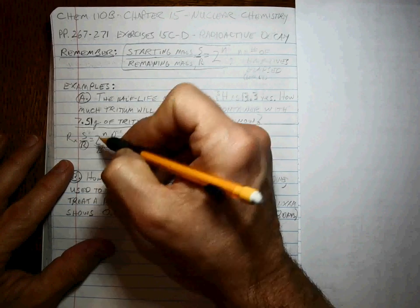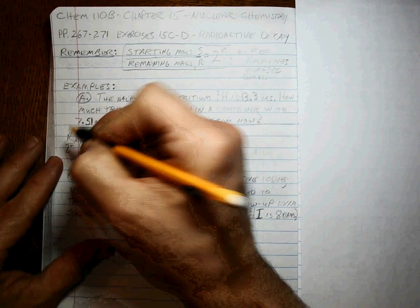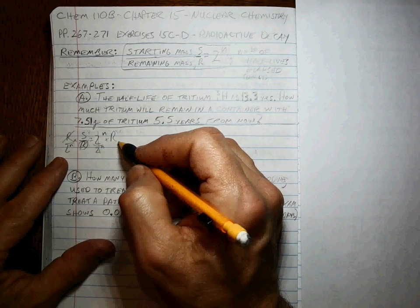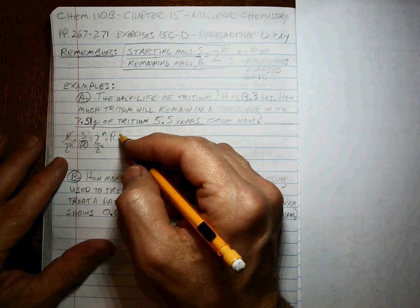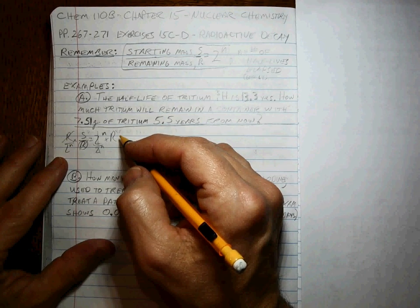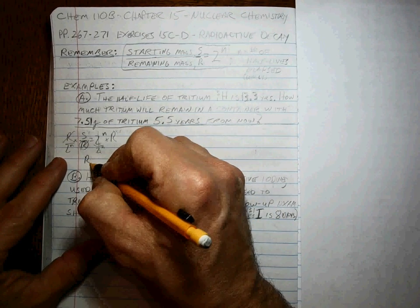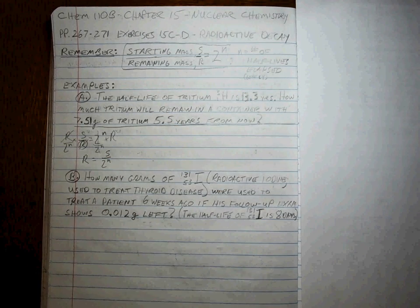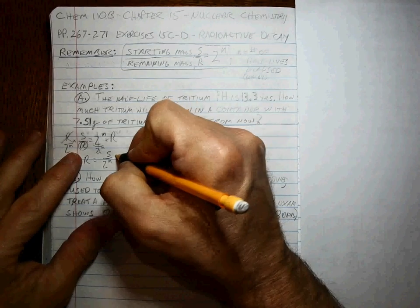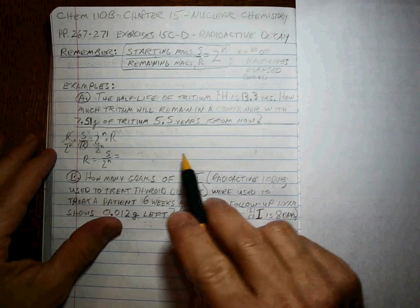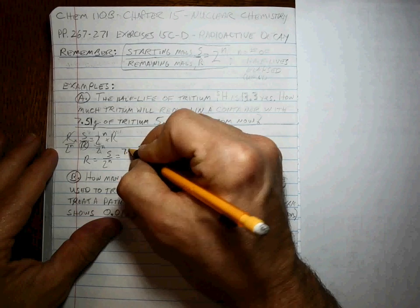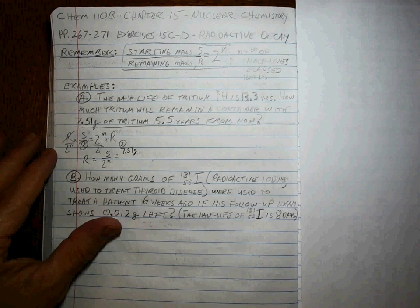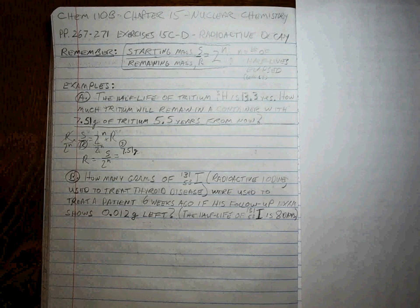What's that give us? R cancels, 2 to the N cancels. R is equal to S over 2 to the N. So we know what S is, right? S is what we start with, 7.51 grams. This has 3 sig figs. This will determine the number of sig figs in our answer, 3 sig figs.